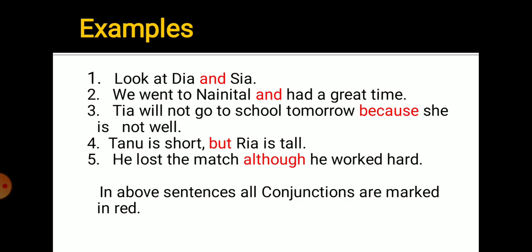Tanu is short. Ria is tall. These are two sentences. We combined them using conjunction but: Tanu is short but Ria is tall. He lost the match. He worked hard. We joined them using the conjunction although: He lost the match although he worked hard. So words like and, because, but, although - they all are conjunctions.